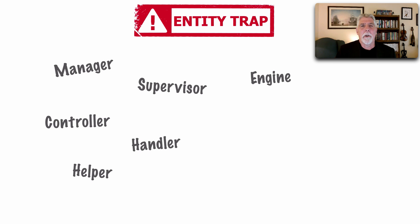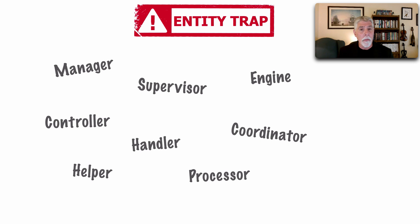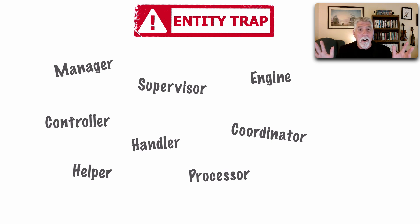Three other common warning words: 'engine' — for lack of a better word, we throw 'engine' on it, like the Ticketing Engine — I have no idea what that does. 'Coordinator' and 'processor' are also warning signs. These are all words that, if you start using them a lot, please step back and say: we're in the entity trap. It will start creating meaningless names, overloaded functionality, and dumping grounds.